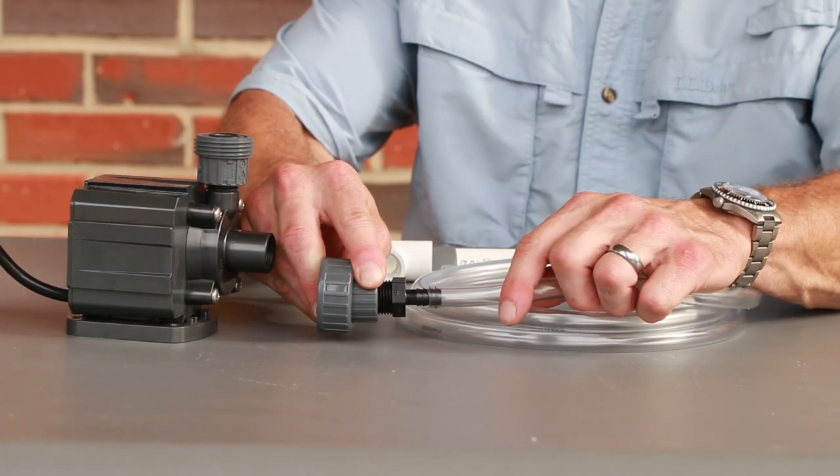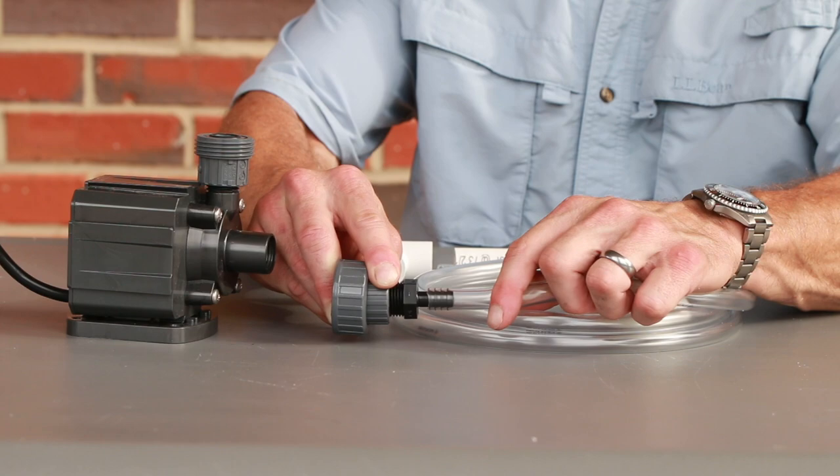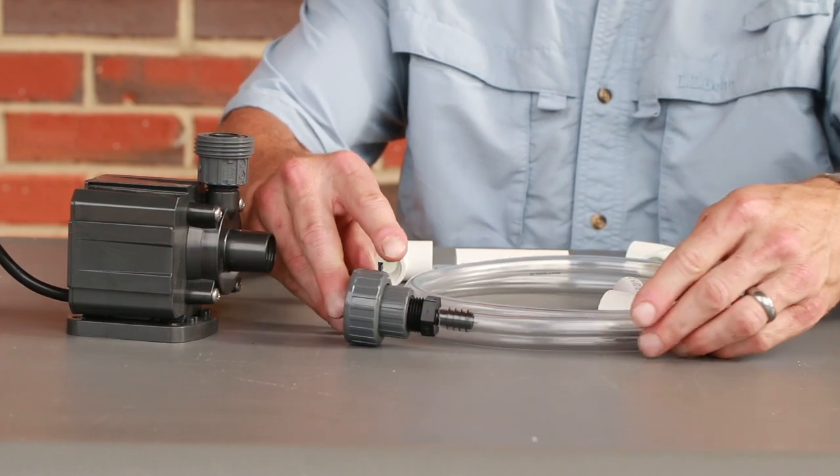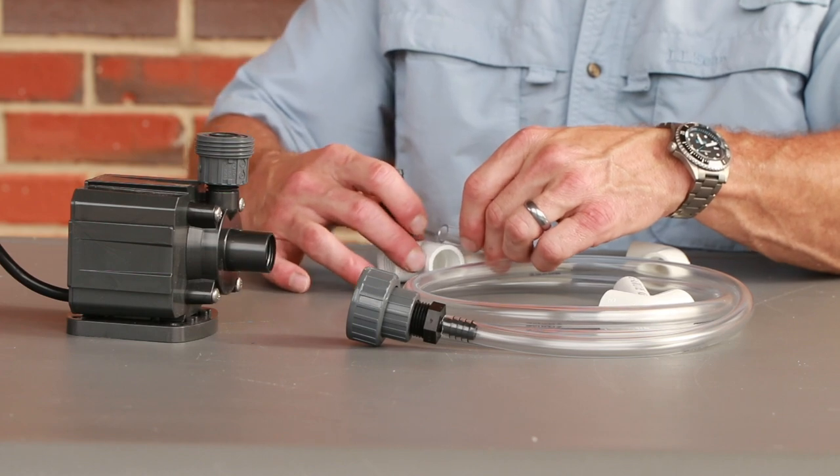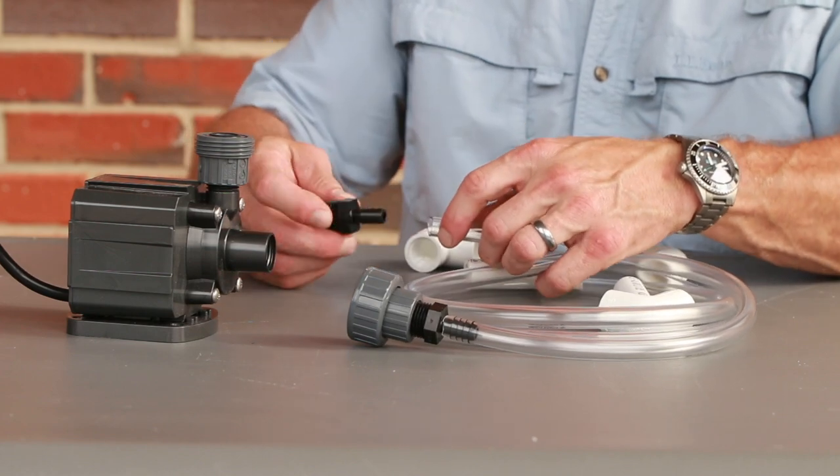Attach the six foot piece of tubing to the barb. Using a flexible hose instead of hard piping allows more possibilities for routing the pipework to move the water from the fish tank to the grow bed.